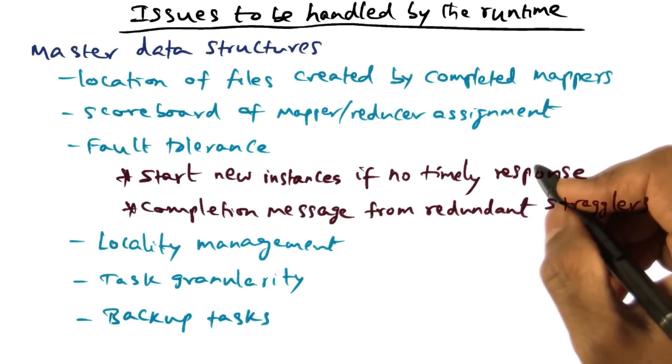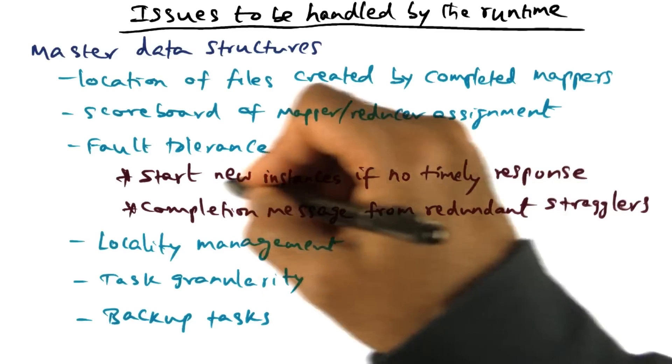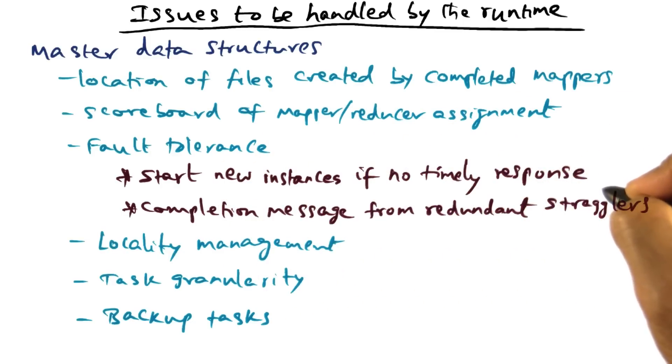In a similar manner, the master may assign a new node to carry out reduce function corresponding to a particular split if there is no timely response from one of the reduce workers. And here again, the output file generation that is associated with a particular reducer split depends on the atomicity of the rename system call that is used to finally say that this is the output file generated.